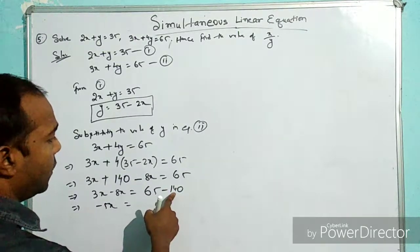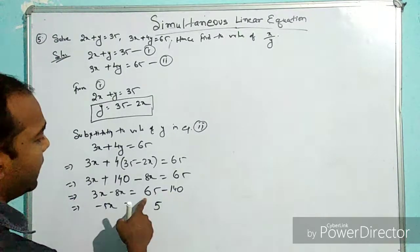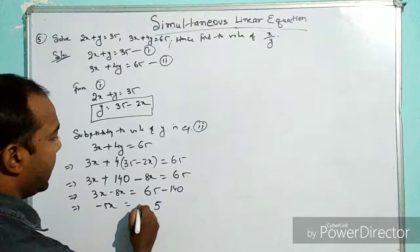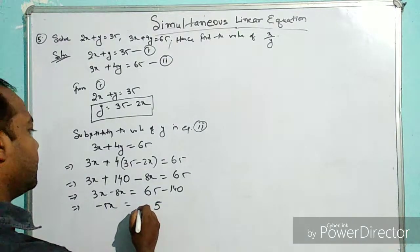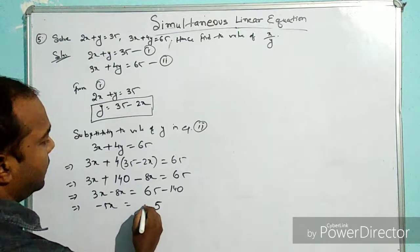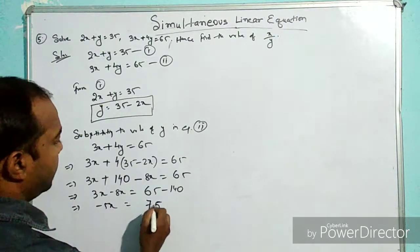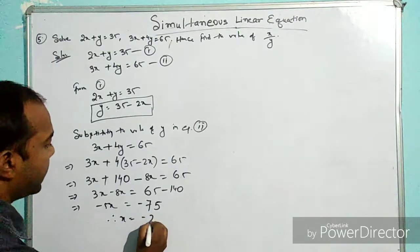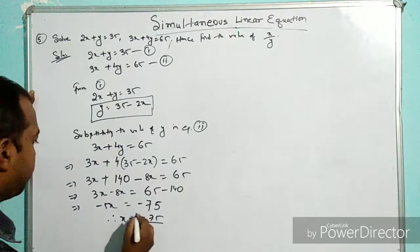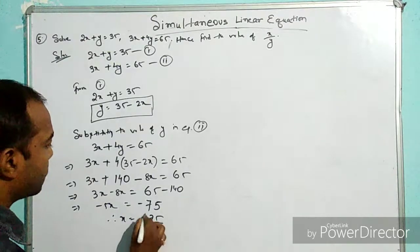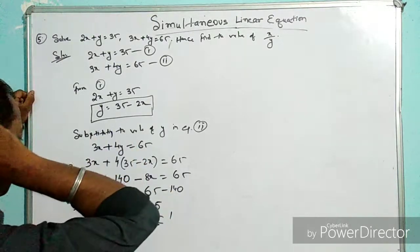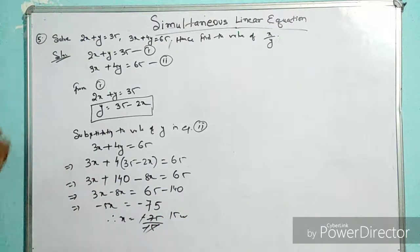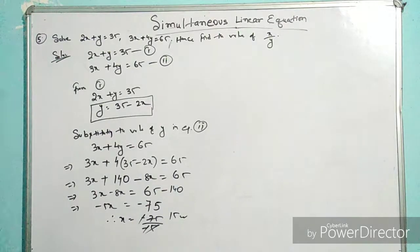Therefore, x = -75 divided by -5, which equals 15. So we have got the value of x and it is positive, x = 15.